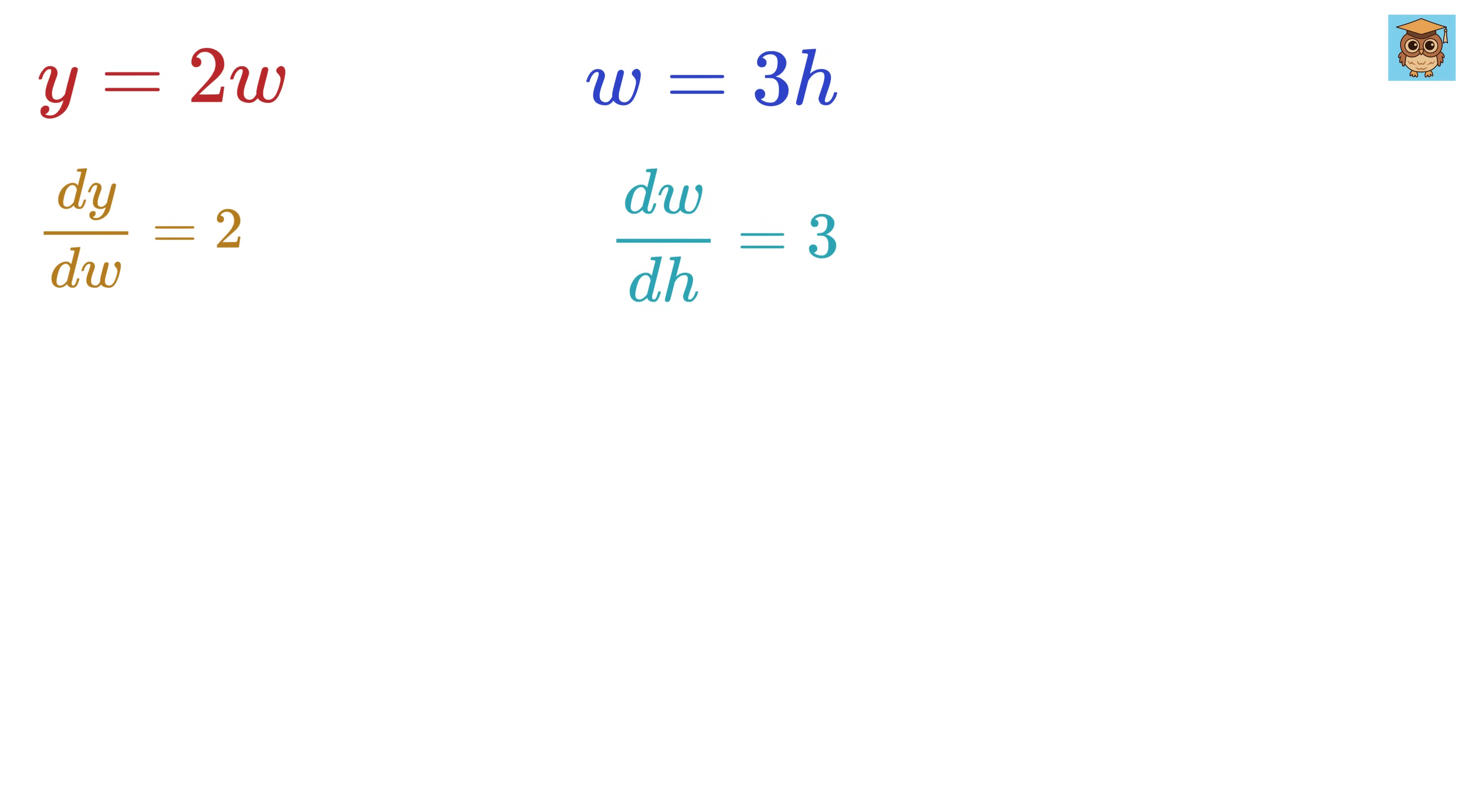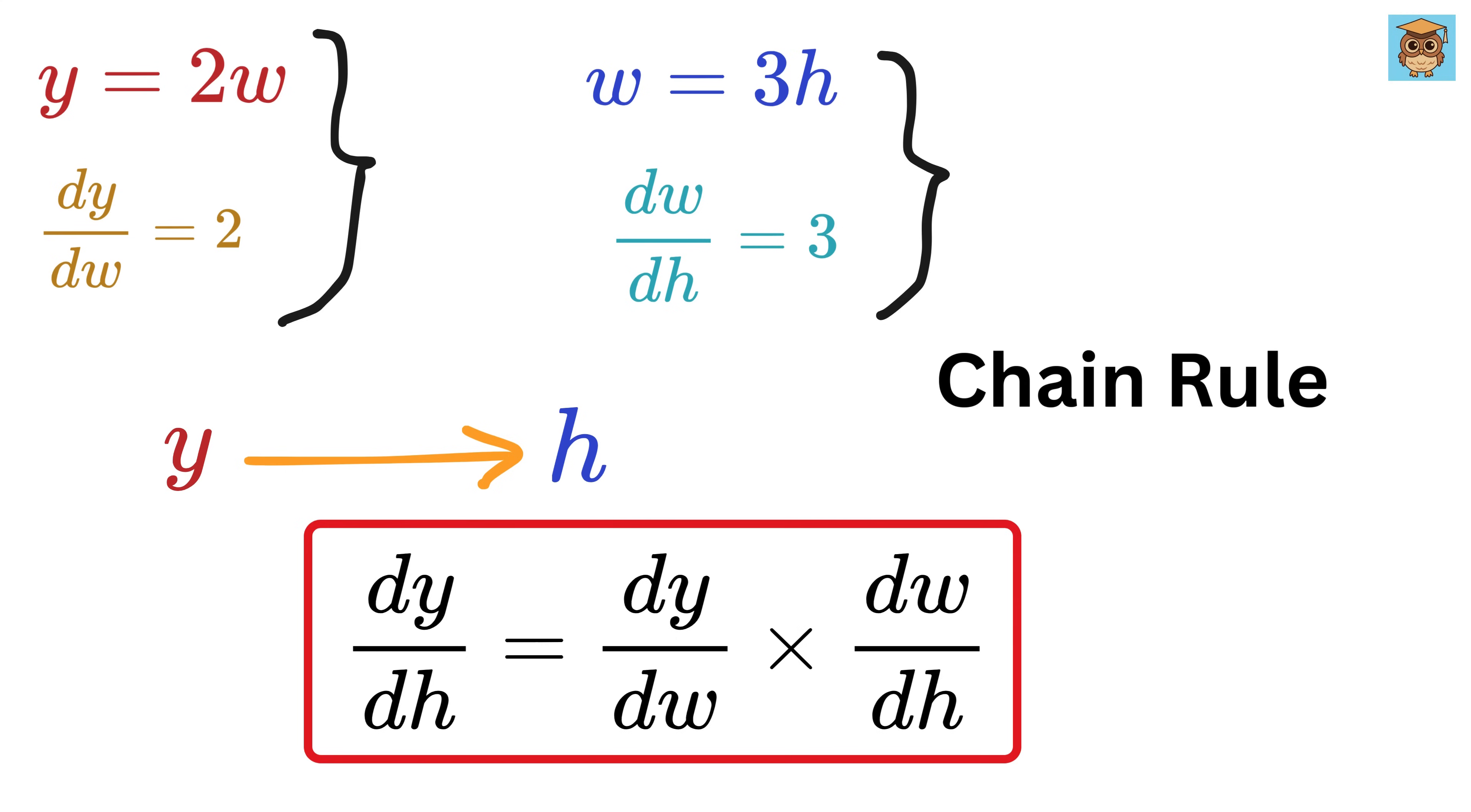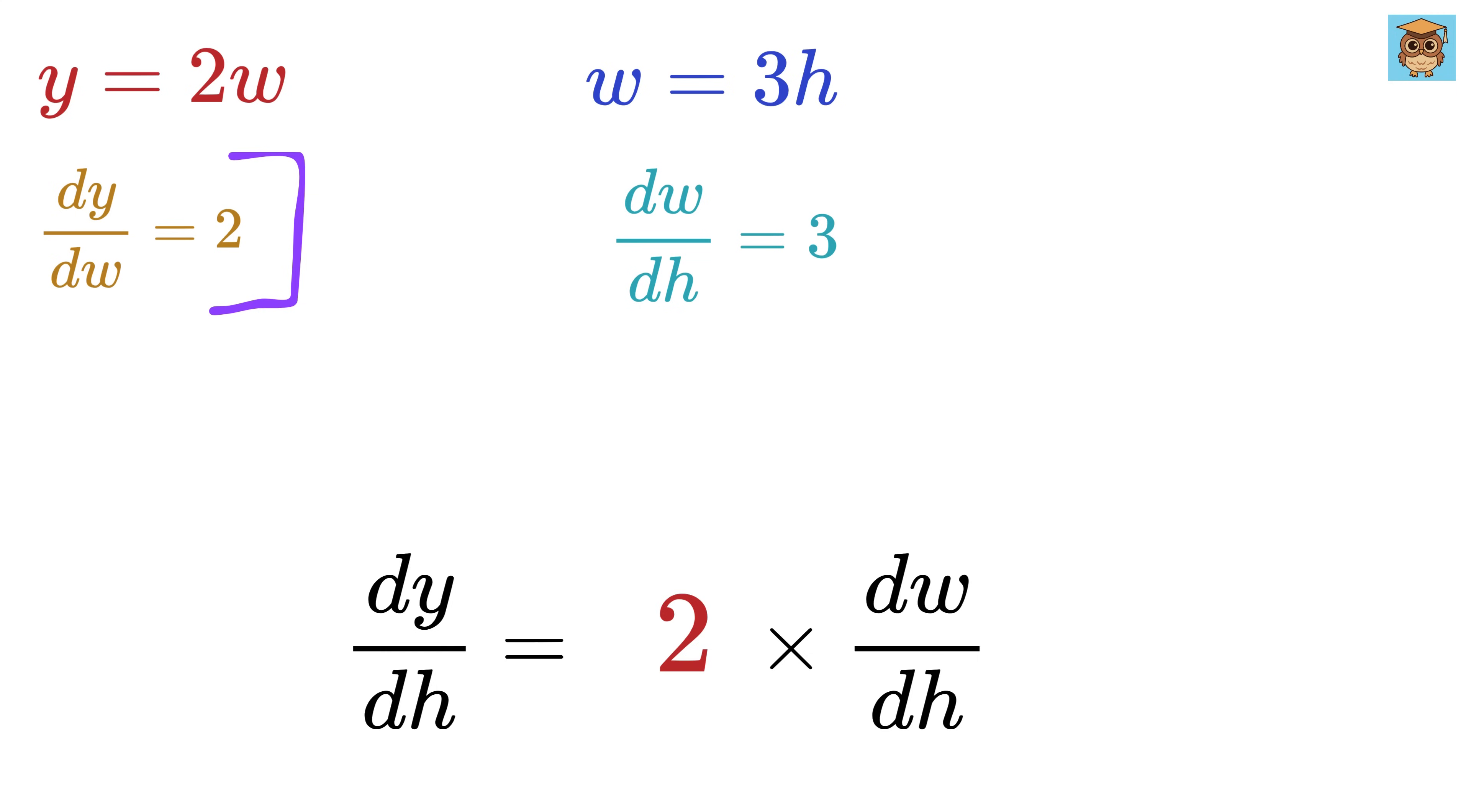Now, here comes the interesting part. We want to know, how does y change as h changes, or what is dy over dh? This is where the chain rule steps in. It says that if y depends on w and w depends on h, then the rate of change of y with respect to h is the product of the rate of change of y with respect to w and the rate of change of w with respect to h. Mathematically, this means dy by dh equals dy by dw times dw by dh. We already know both of these. dy by dw is two, and dw by dh is three. So, using chain rule, when we multiply these two results, we get dy by dh equals two times three or six.